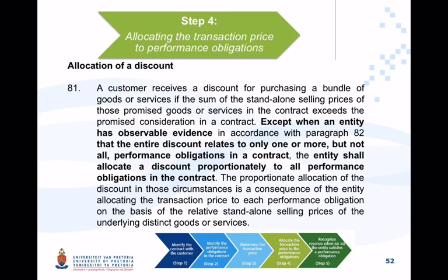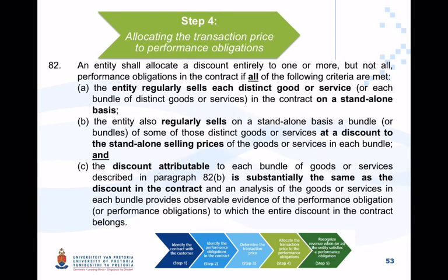It may happen that your transaction price includes a discount. A discount amount is allocated to the various components proportionally, unless you can show that the discount is particular to one component. To meet that, you need to pass three tests: the entity must regularly sell each component on a standalone basis, sell them at a discount, and the discount on the transaction price must approximate the discount normally granted on that specific component.